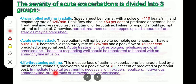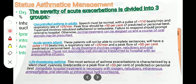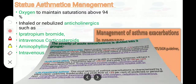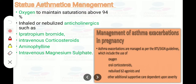Life-threatening asthma is the most serious exacerbation, characterized by a silent chest, cyanosis, bradycardia, or peak flow less than 33% of predicted or personal best. Immediate hospital treatment is necessary with oxygen, nebulizer, intravenous theophylline, or intravenous hydrocortisone. Status asthmaticus management includes oxygen to maintain saturation above 94%, inhaled or nebulized anticholinergic such as ipratropium bromide, intravenous corticosteroids, aminophylline, and intravenous magnesium sulfate.